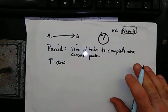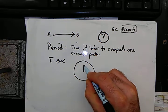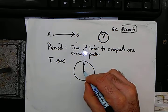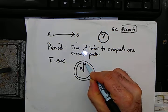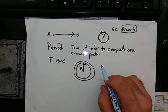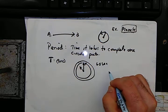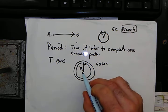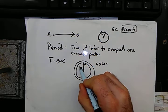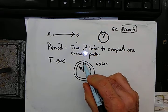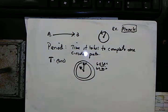Another situation would be a normal clock. Here's the minute hand, here's the hour hand. The period of rotation of the minute hand is exactly one minute or 60 seconds. Looking back at the clock, the period of the second hand is 60 seconds and the period of the minute hand is 60 minutes — one complete circular path.